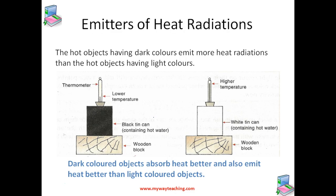Again, we take a black tin can and a white tin can of the same size, placed on wooden blocks separately in a shady place inside the room. Both tin cans are filled with the same hot water, and initial temperatures are noted. We allow both tins to stand for 10 minutes. After 10 minutes, we note the temperatures again and find that the water in the black tin can is at a lower temperature than in the white tin can, meaning the black tin lost heat faster than the white tin. So the black object is a better emitter of heat.